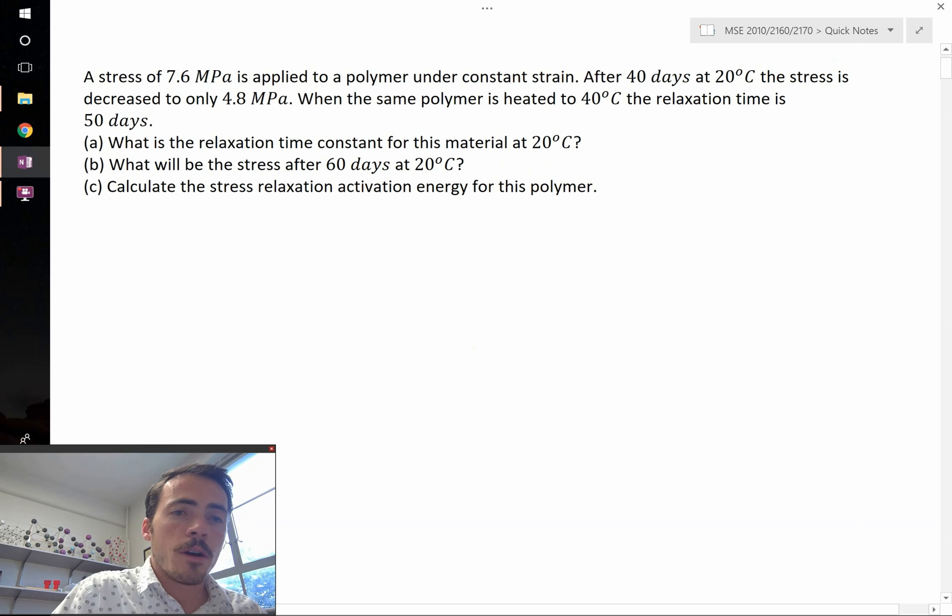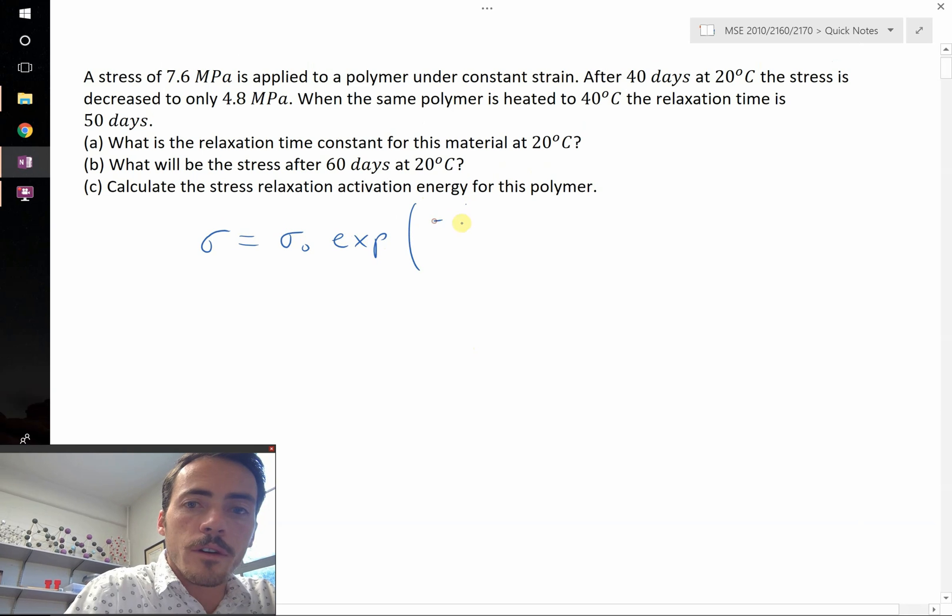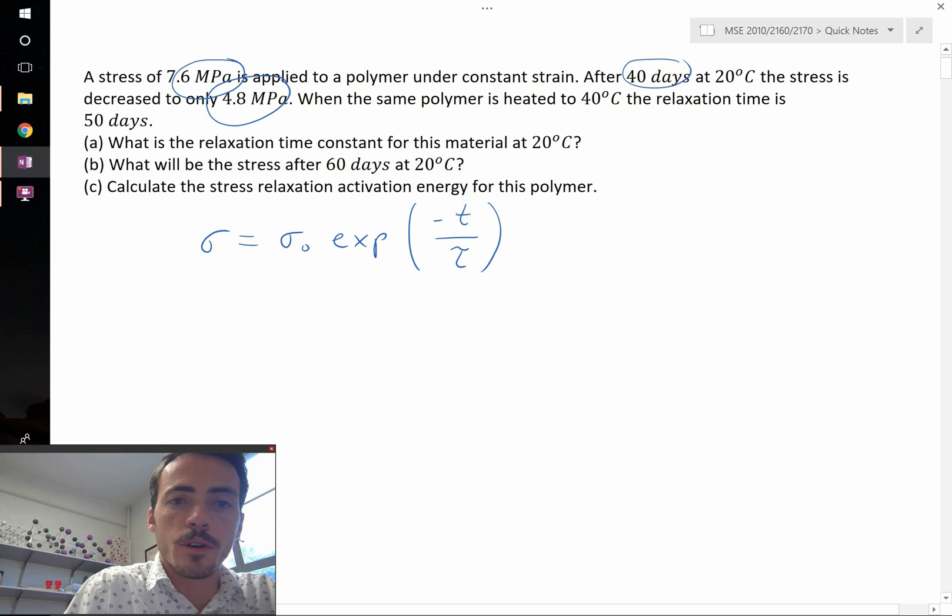Okay, let's start with part A. Part A is going to ask us to determine the relaxation time constant. So let's start with our equation. The stress is equal to the initial stress multiplied by the exponential of negative time held at that stress divided by a relaxation time constant. So we have the initial stress 7.6 megapascals, the stress after 40 days 4.8 megapascals, and we know that it took 40 days to get there. So we can plug in for T, sigma, and sigma naught, and solve for tau.